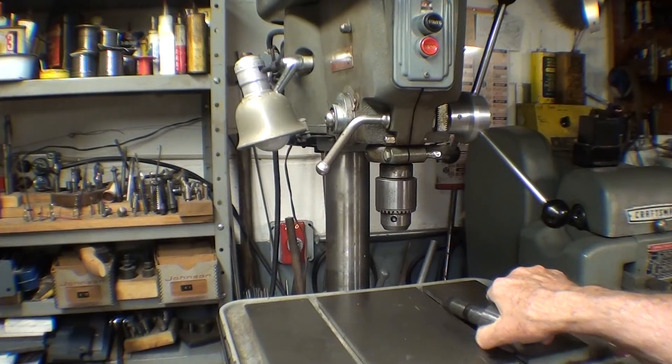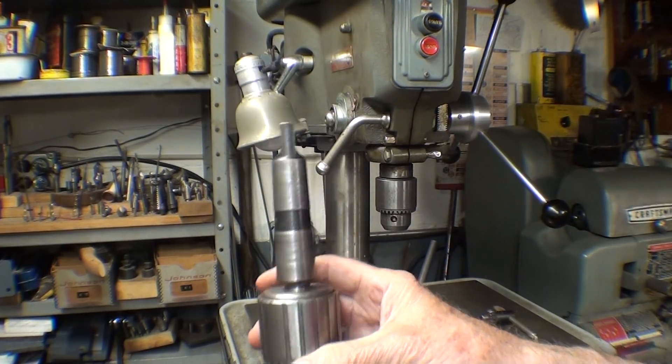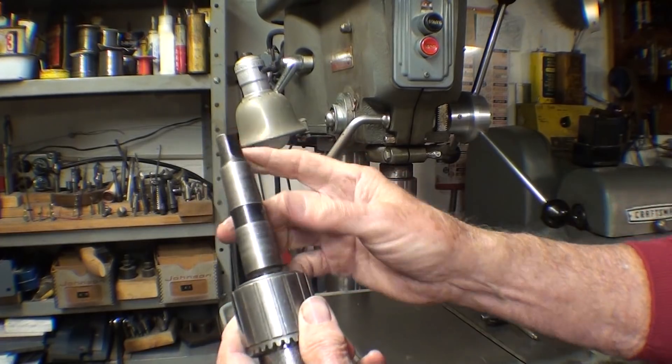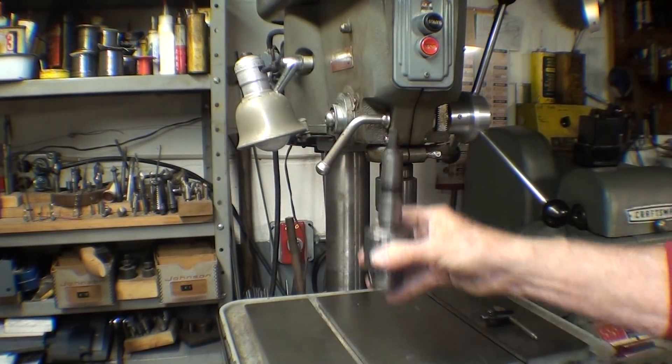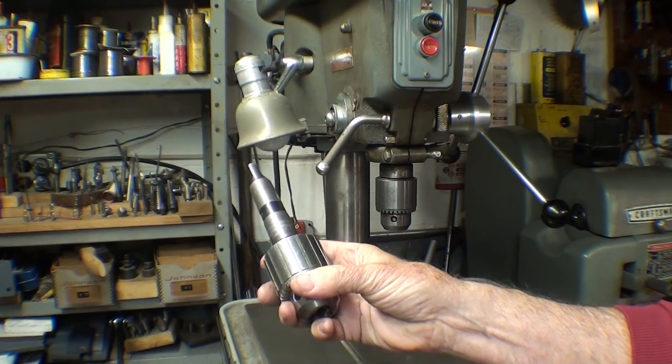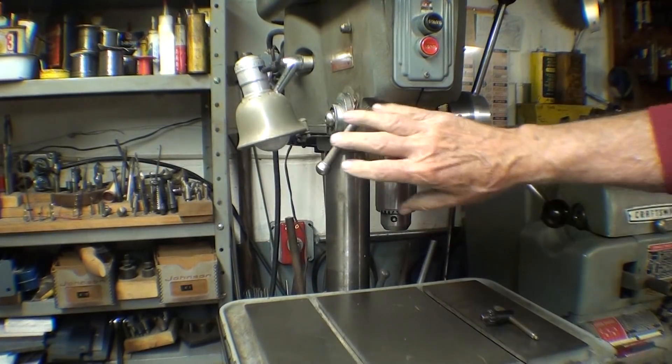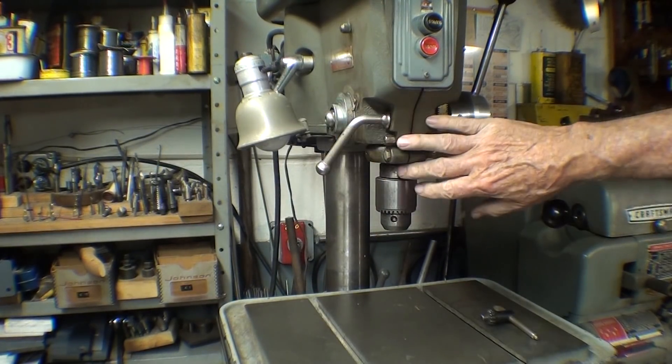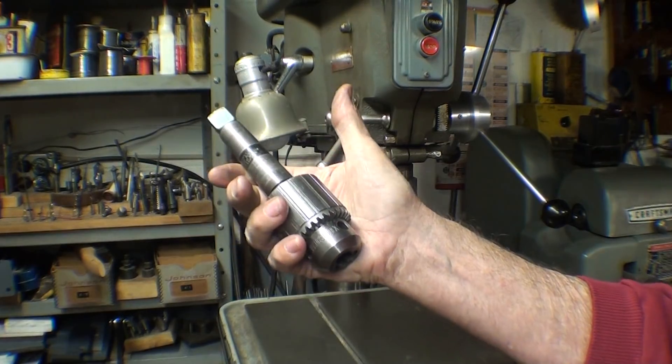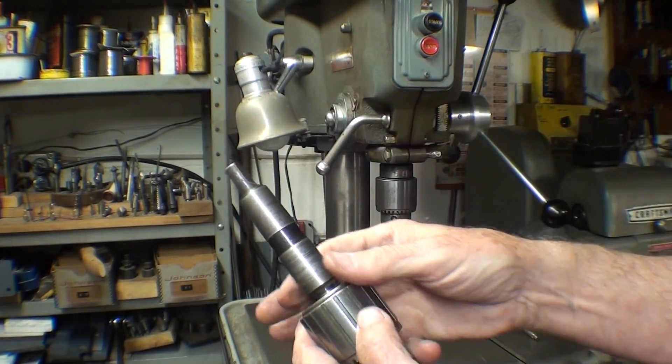Now you may have drill presses that use a Jacobs-type chuck that have the long taper. This is a number three, and it goes right up into the spindle, but more than likely you do not have that in the home workshop type of drill presses. This is usually more industrial, and this also fits on the lathe.